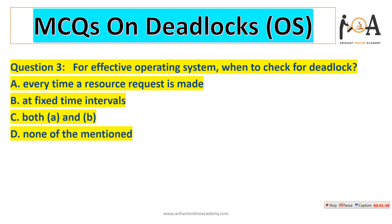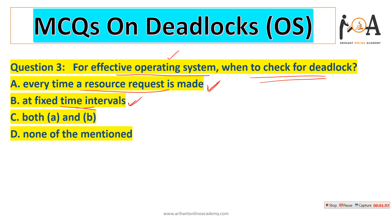The next question is: for an effective operating system, when should we check for deadlocks? Option A — every time a resource request is made — is a required condition. Option B — at a fixed time interval — is also a required condition, because at fixed intervals we check whether a deadlock exists. So option C — both of the above — is the correct answer, as we need the most accurate answer.